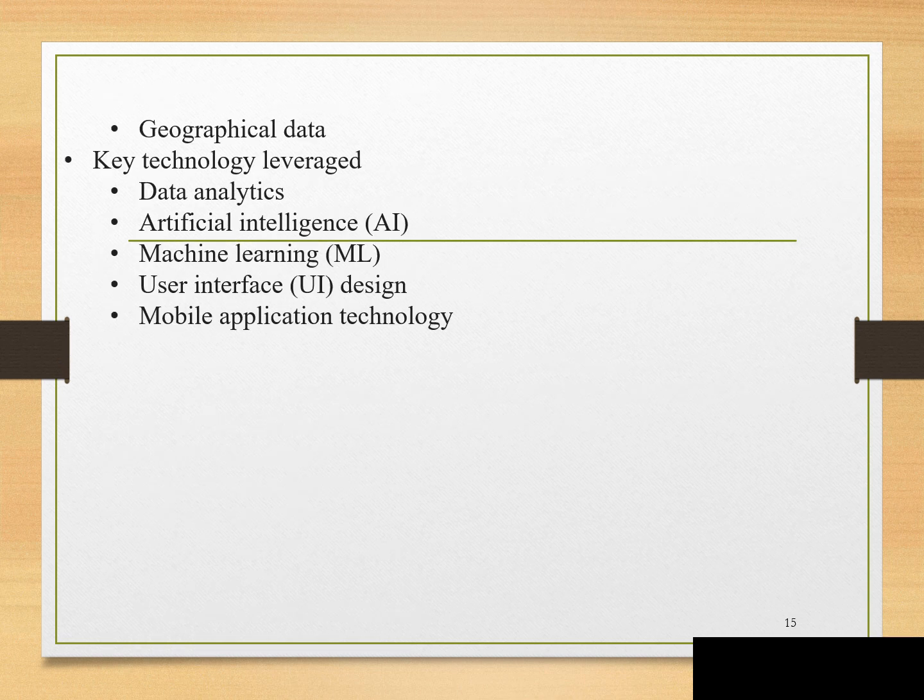Geographical data includes environmental factors affecting health. Key technologies leveraged include data analytics — such as gym attendance and health metrics from fitness trackers — to tailor insurance patterns to individual wellness habits. Artificial intelligence makes predictive analysis on healthcare trends, personalizing insurance offerings.